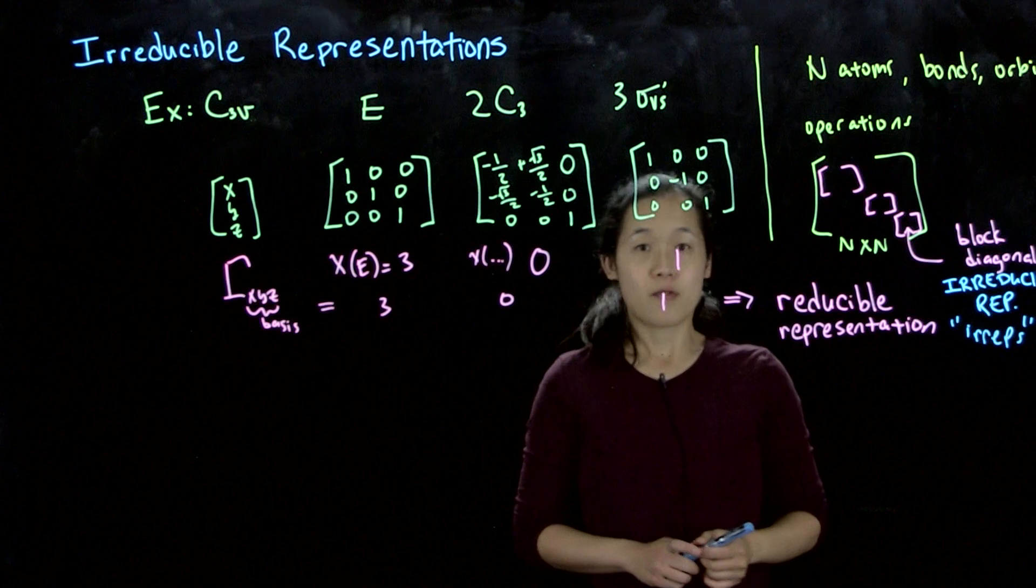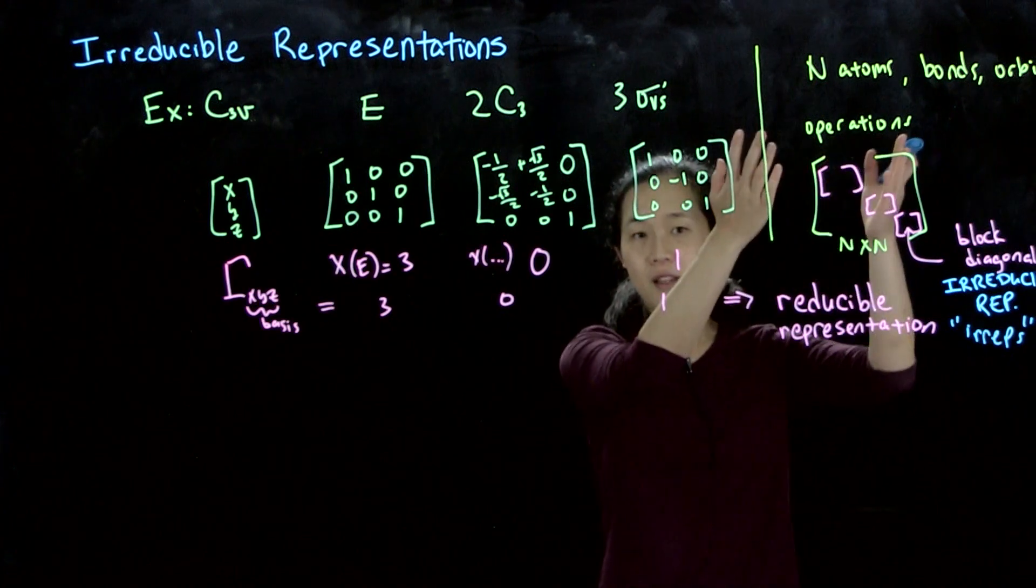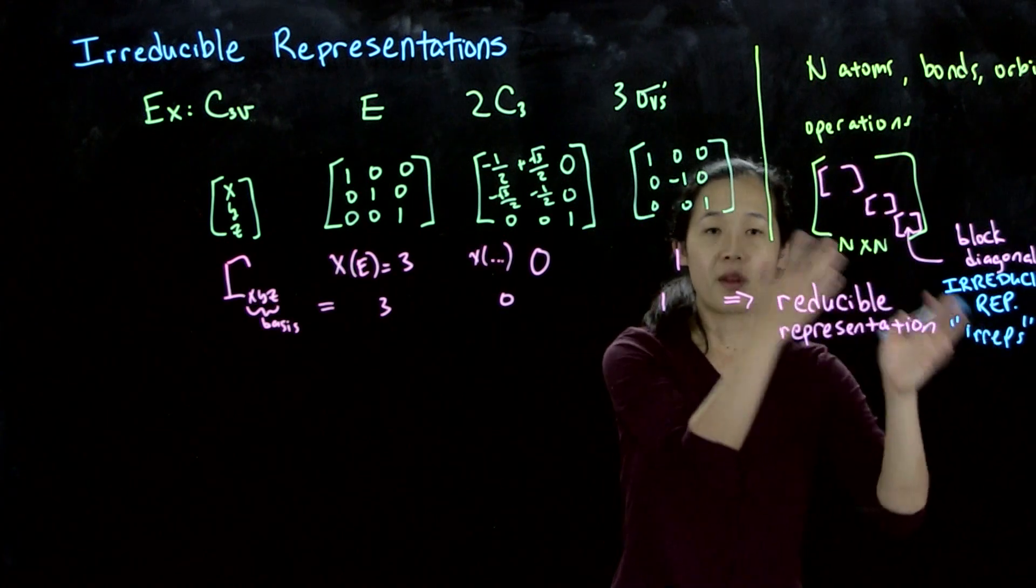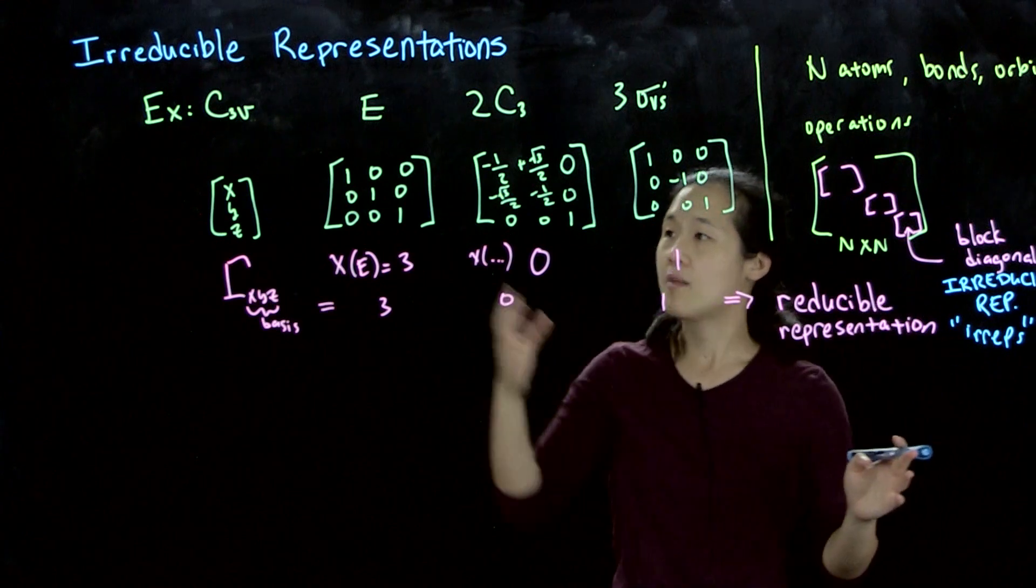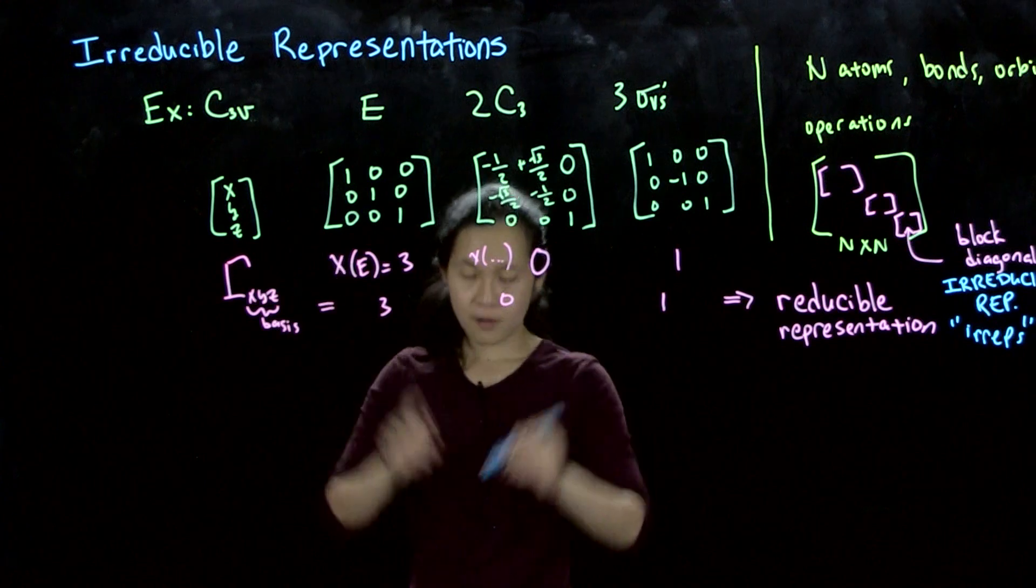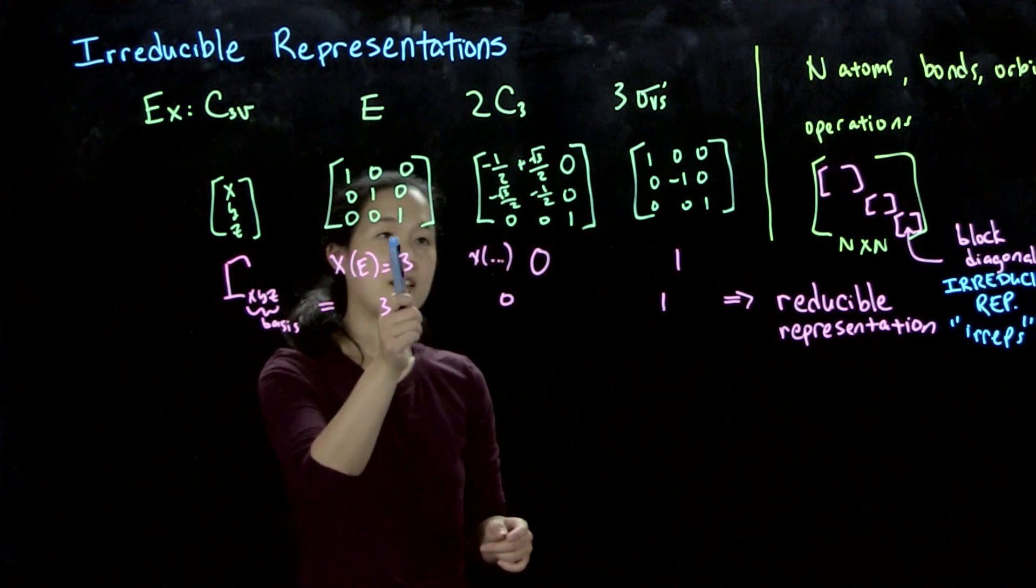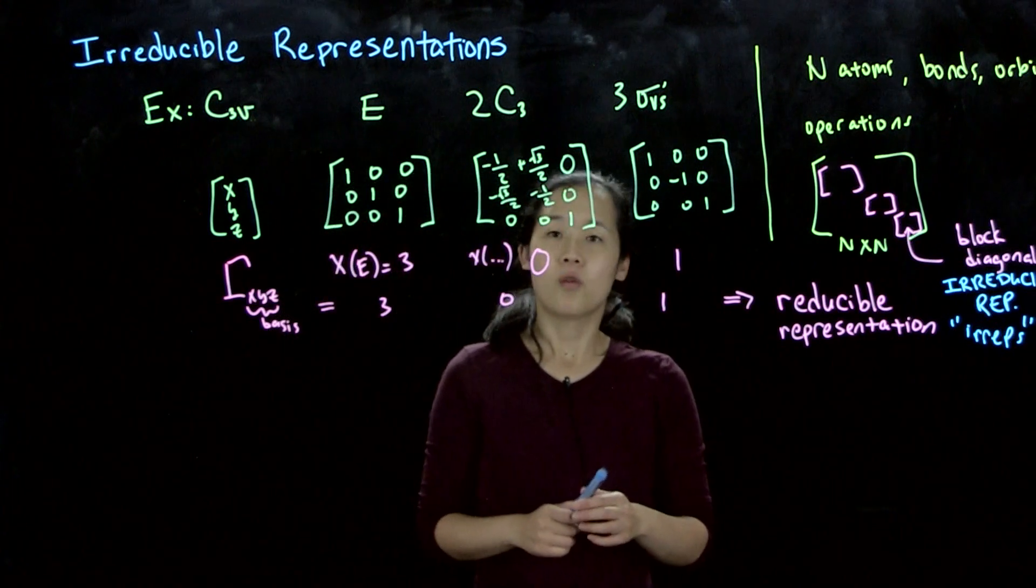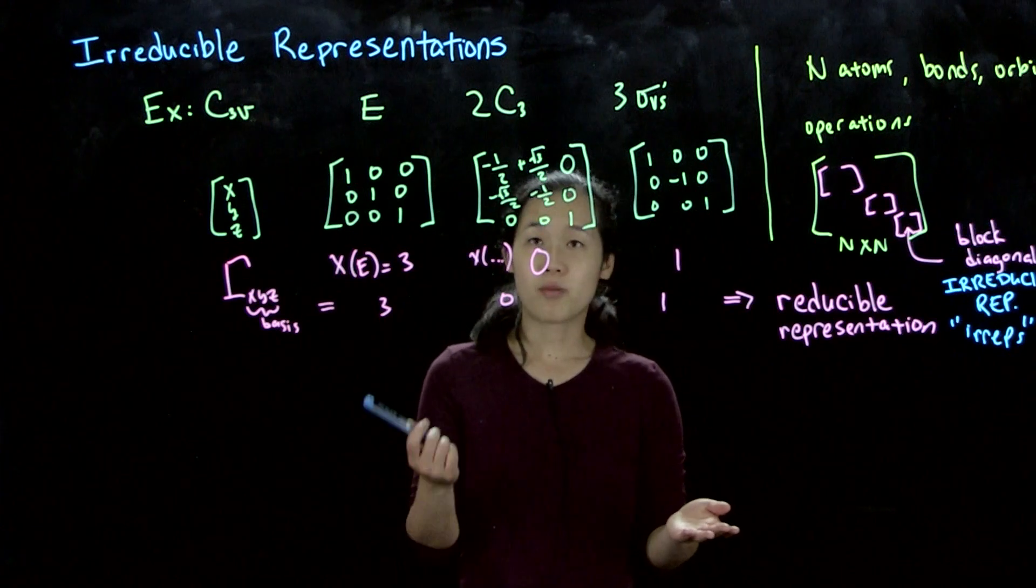We can build up any n elements as a sum of irreducible representations. So for this example, when we're block diagonalizing, we have to figure out which matrices we can block diagonalize down to.